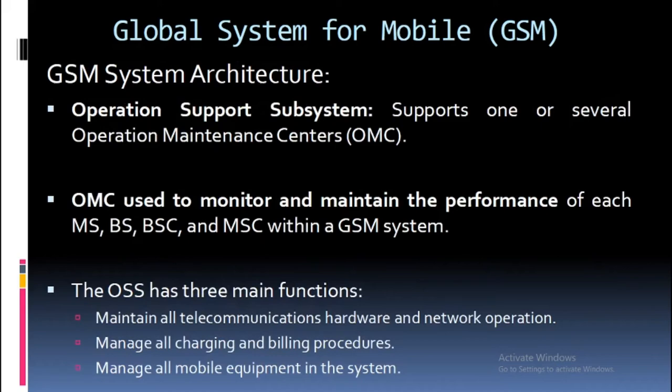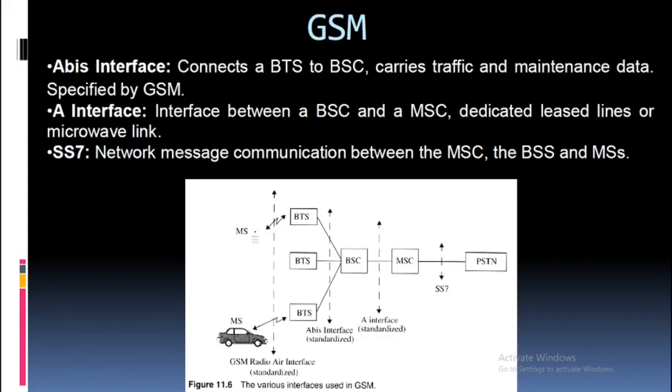The Operation Support Subsystem (OSS) supports one or several Operation and Maintenance Centers (OMC). The OMC is used to monitor and maintain the performance of each MS, BS, BSC, and MSC within a GSM system. The OSS has three main functions: maintain all telecommunications hardware and network operation, manage all charging and billing procedures, and manage all mobile equipment in the system.